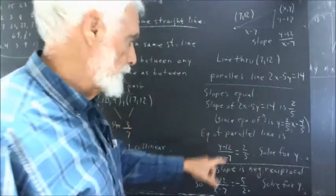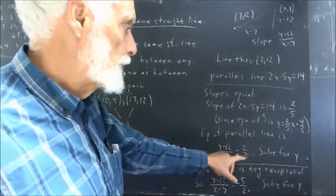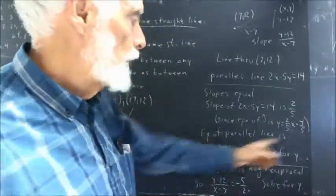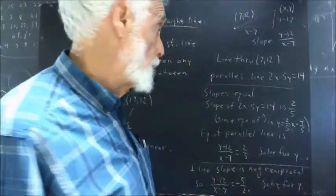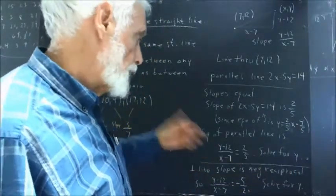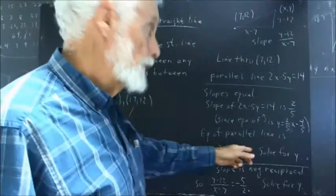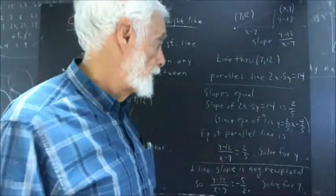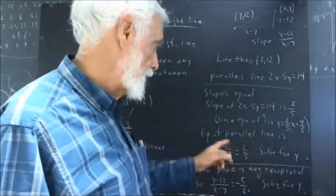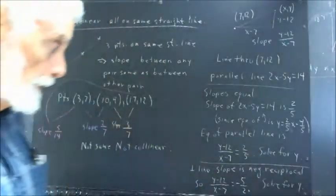Which means, again, that y minus 12 over x minus 7 has to equal two-fifths. We solve this for y, and we get the equation of the line. Okay, I'll solve that for y in a minute. But this solves the problem. All you've got to do is multiply through by x minus 7, add 12 to both sides, and you have it.